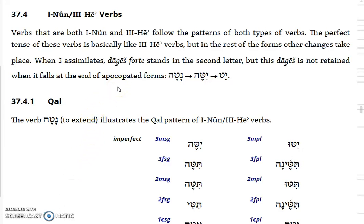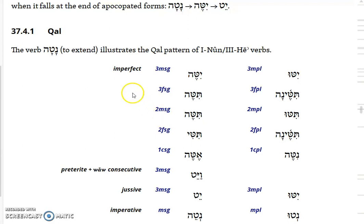We now move on to doubly weak verbs that have a nun in the first position and a hey in the third position. This is going to be interesting because you'll get assimilation of the nun and you'll sometimes lose your hey. With the perfect, it's pretty much regular, but when you get to the imperfect, the third masculine singular - natan means to extend - and the imperfect would be yitten, and the nun will assimilate and show up as a dagesh in all these forms.